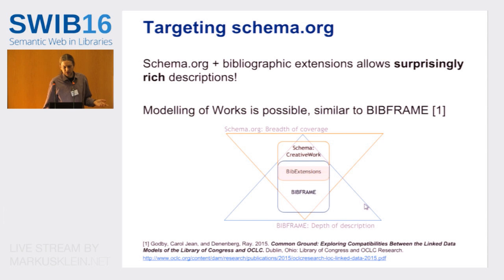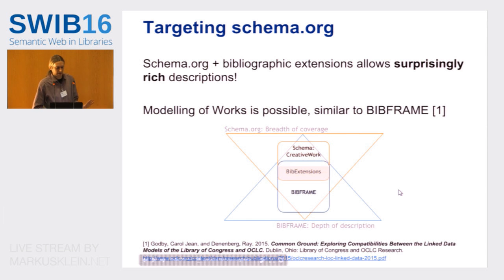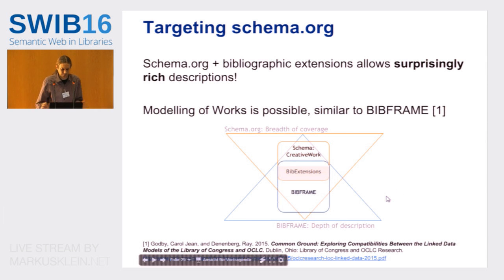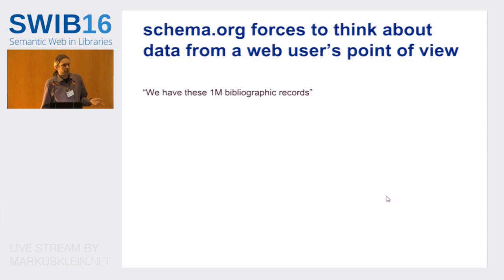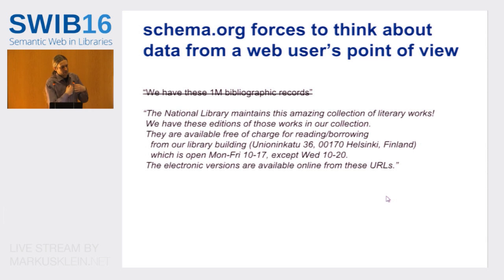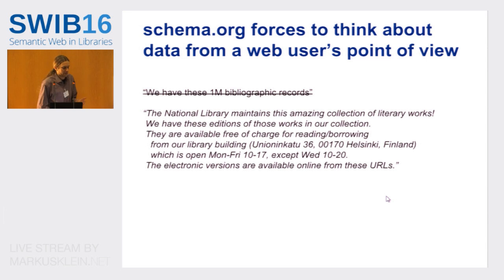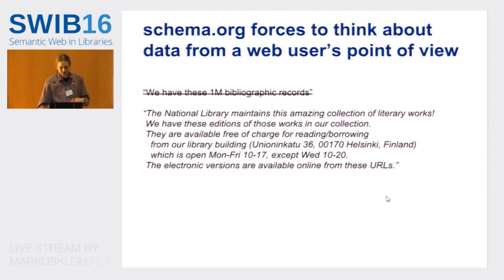We're targeting schema.org currently because you can do surprisingly rich descriptions. You can model works as a separate layer — it's not as detailed as BibFrame, but you get the advantages of a full model and can model things beyond just bibliographic data. It forces you to think from a user's point of view: instead of saying 'we have this one million bibliographic records,' you think 'we have this collection of works, we have these editions of those works, they're available from this building — and here are the opening hours — and you can point to electronic versions when they exist.' It forces you to think about what the consumer would like to see.